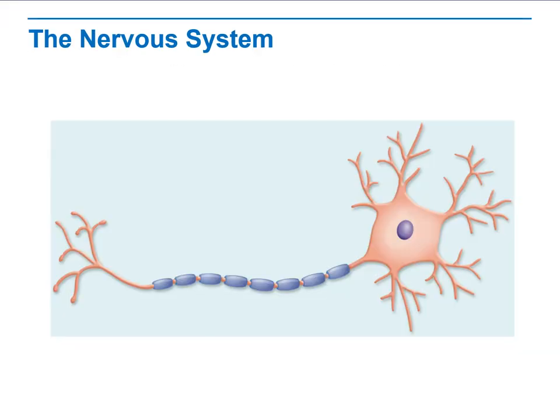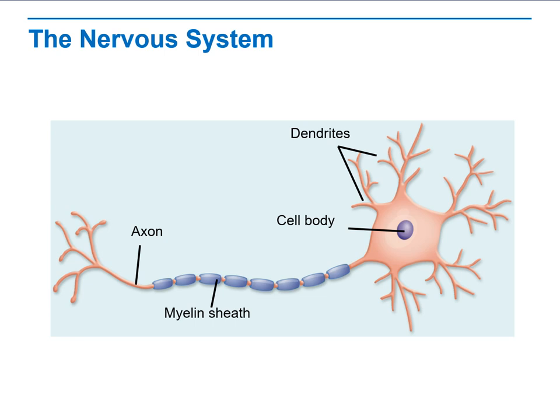First of all, we will start with the nervous system. When we talk about the nervous system, we need to talk about the neurons, or the nerve cells, and the anatomy of this cell. When we talk about the anatomy, we need to start with the cell body, which is like the nucleus of the normal cell, relating all of the functions of the nerve itself.